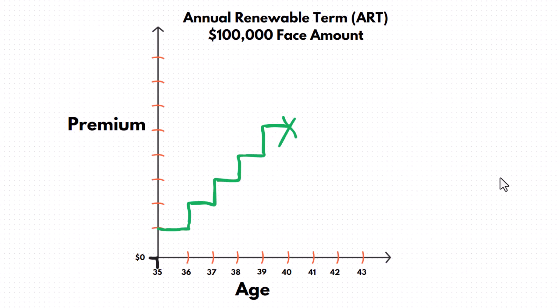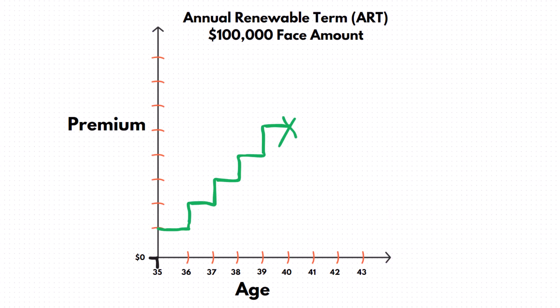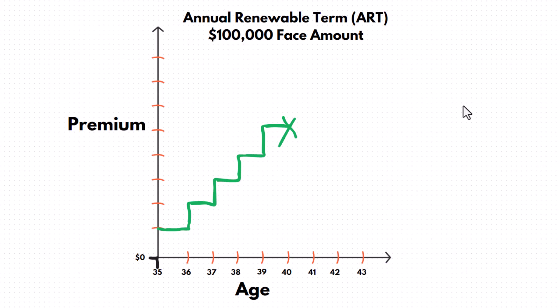This is an example of how the premium increases over time in an annual renewable term (ART) policy, also known as a yearly renewable term. This example uses a hundred thousand dollar face amount policy, but it functions the same way regardless of the face amount.